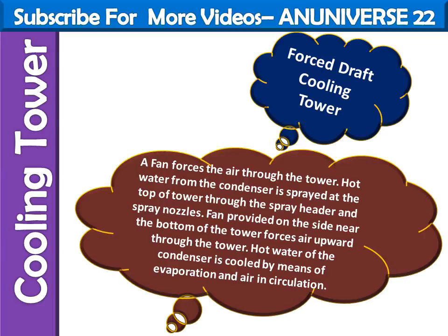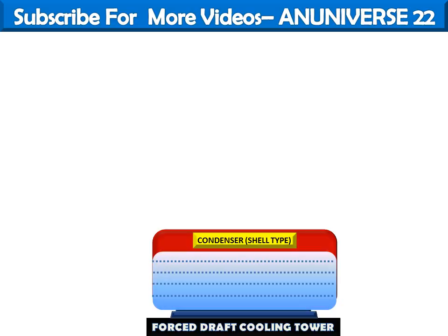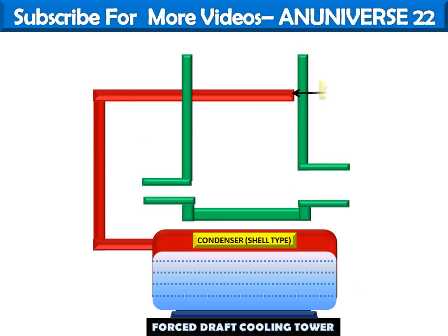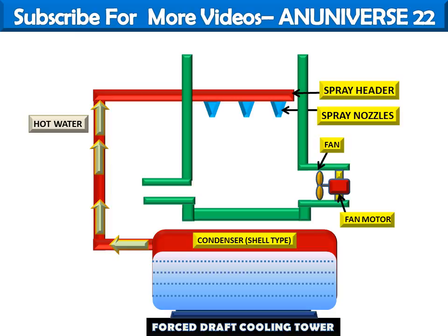With the help of a diagram, we can see the working of the Forced Draft Cooling Tower. This is the foundation for the condenser — cell type — and there is water filled in the condenser. Here is the pipe arrangement for the spray header, and from the spray header there are spray nozzles. This is the fan and the fan motor. With the help of arrows we can see the path of hot water supplied from the condenser to the spray header.